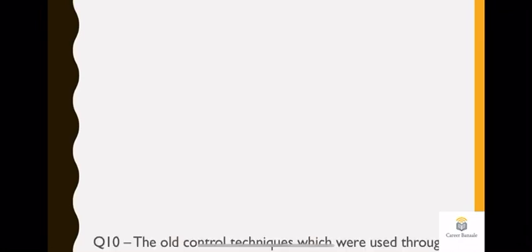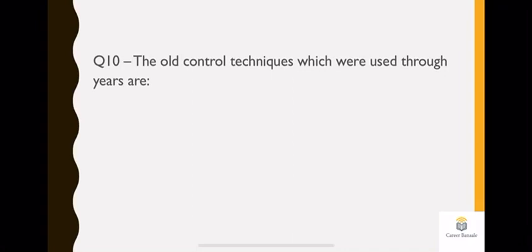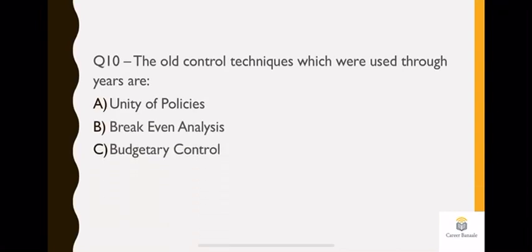Question 10: the old control techniques which were used throughout the years are what? If you have read the controlling chapter in management, then all these techniques would have been given to you. You should be able to at least know their names. The question asks: the old control techniques which were used through years are - option A unity of policy, option B break-even analysis, option C budgetary control, and option D all of the above. Definitely the answer is option D, which is all of the above, because all these are techniques which are used in control.